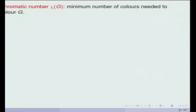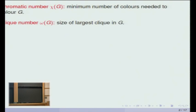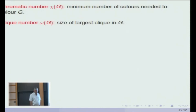You're all graph theorists, so you know what the chromatic number of a graph is, you know what the clique number of a graph is — clique number means the number of vertices in the largest complete subgraph. We care about the connection between the two. Certainly the chromatic number is at least the clique number, and it would be nice if there were a reverse inequality.